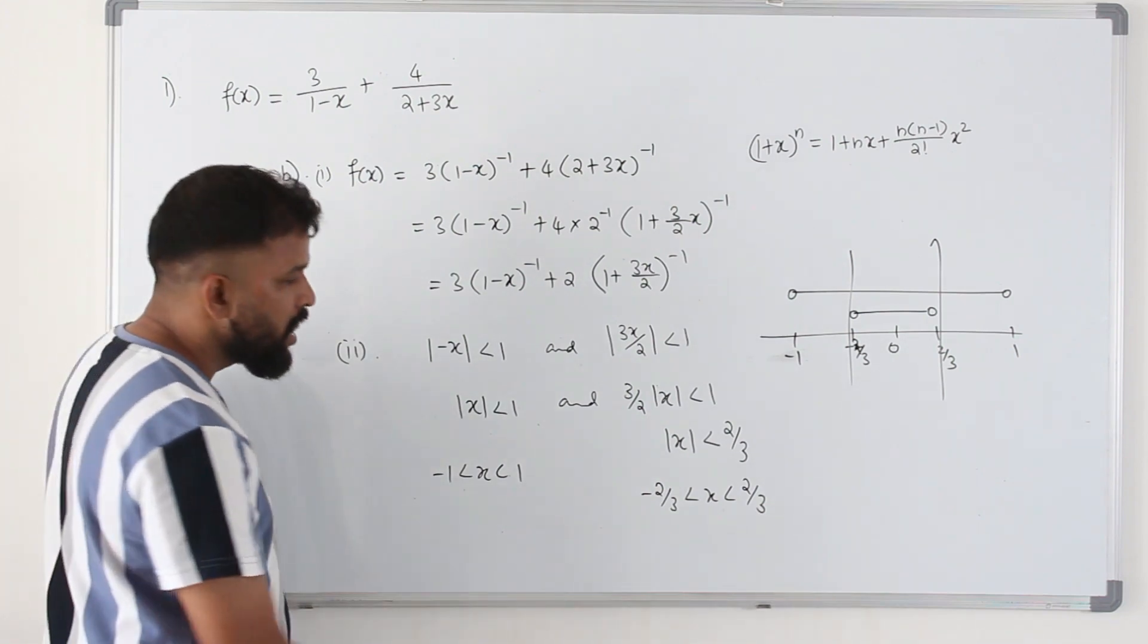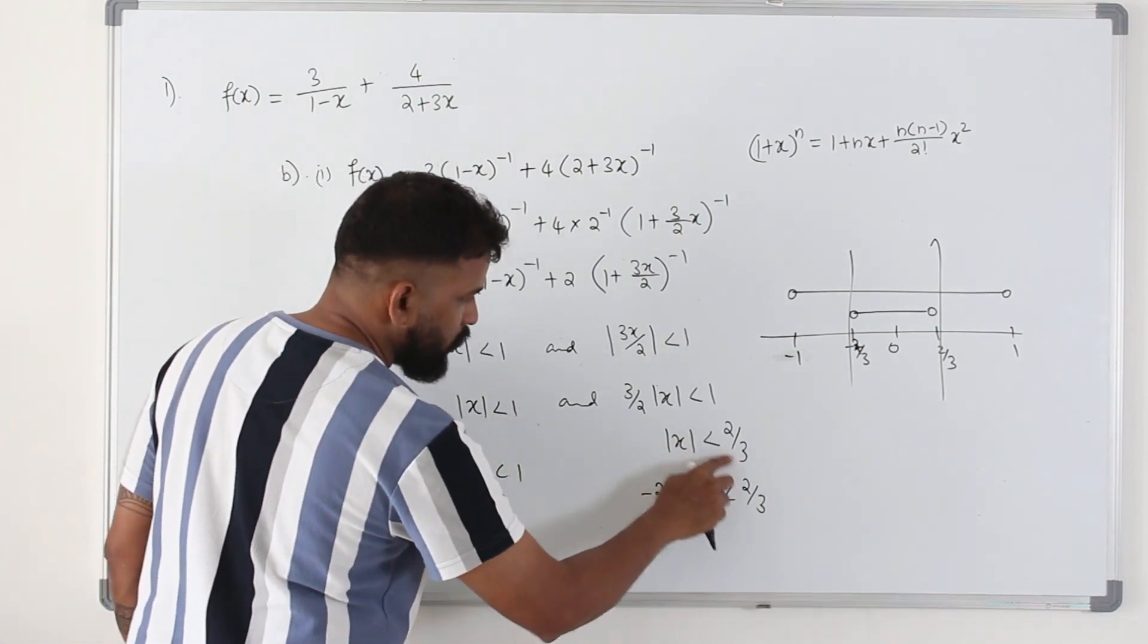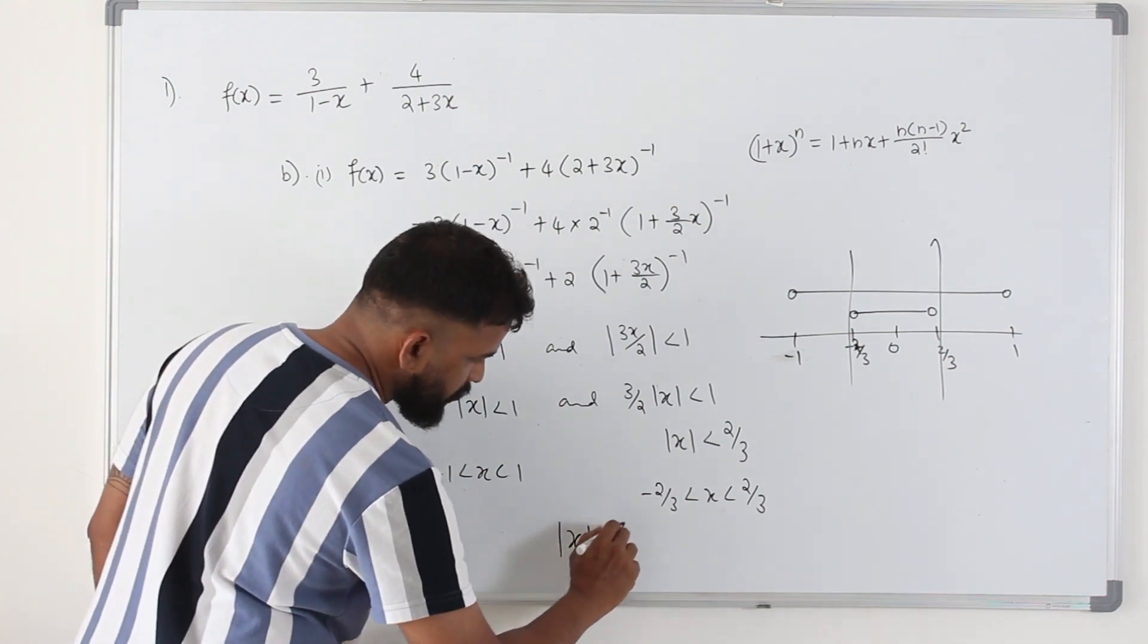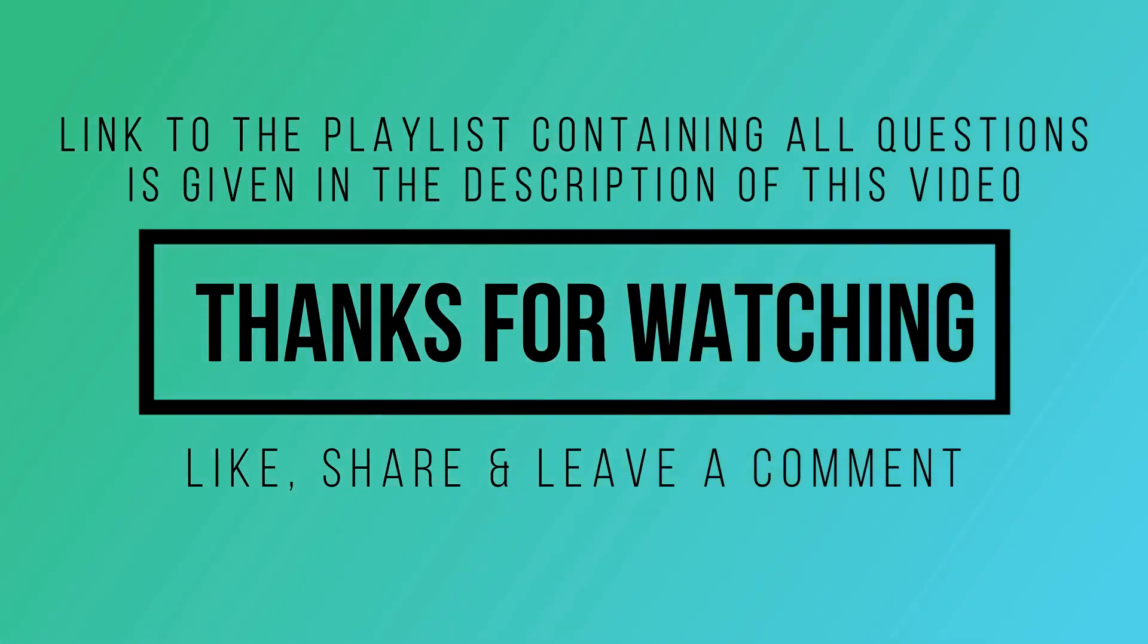But what is the shortcut here? Always take the smaller number. This is the smaller number. Therefore, the final solution is this. You can ignore this. You can ignore this.